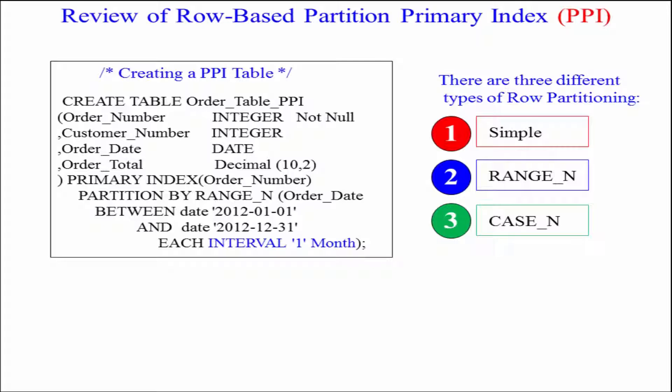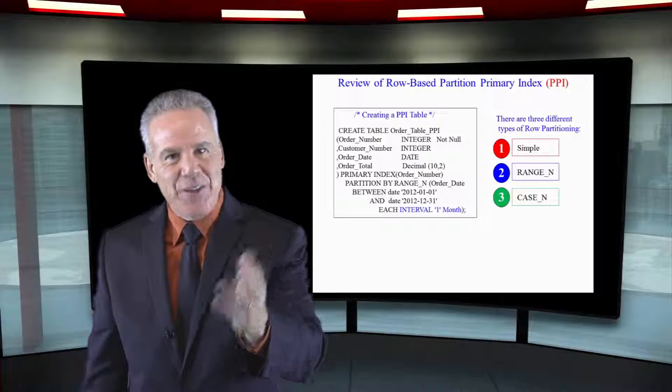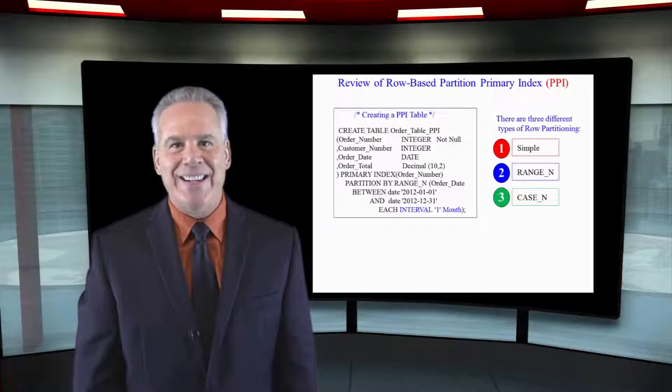In this we have our table, we've got our primary index, but we're partitioning by a range end on the order date each interval one month. Let's take a look at what that looks like when the data is loaded.